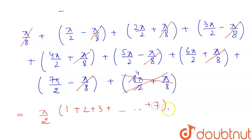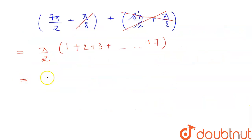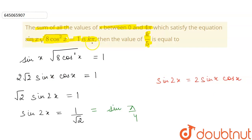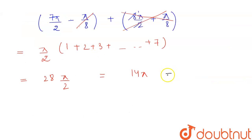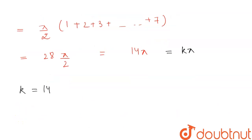The remaining terms go up to 7·(π/2). So the sum is (1 + 2 + 3 + 4 + 5 + 6 + 7) · π/2 = 28 · π/2 = 14π. Since the sum equals kπ, we get k = 14. Therefore k/5 = 14/5 = 2.8.